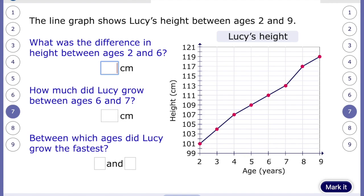At the age 6, we read up and then read across and she was 111 centimetres. So the difference between those two is 10 centimetres. How much did Lucy grow between the ages of 6 and 7? So we know at 6, she's 111. At the age of 7, she was 113. So she's grown 2 centimetres.